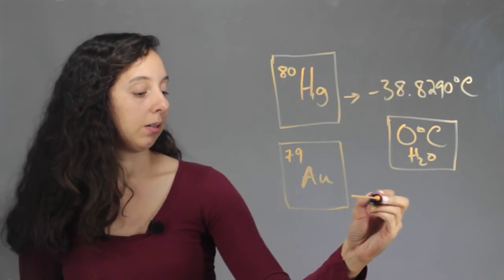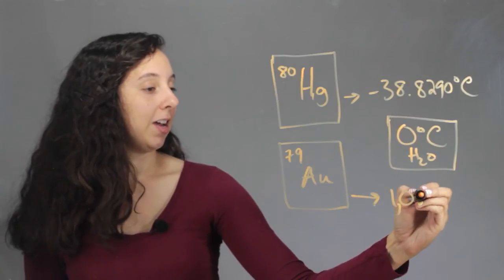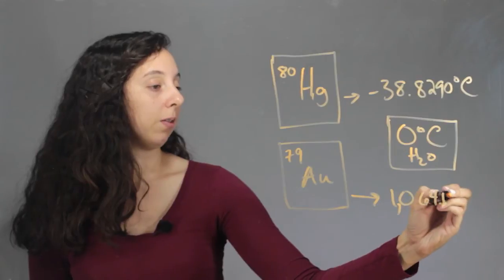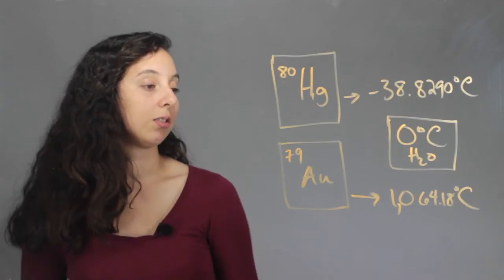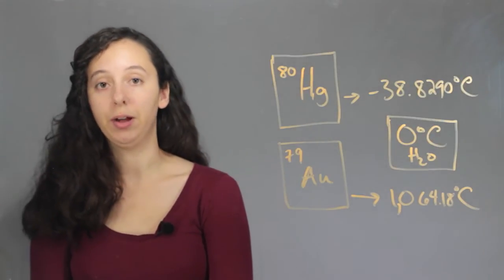And gold's melting point is 1064.18 degrees Celsius. So obviously you have to heat gold up to extreme temperatures before it melts.